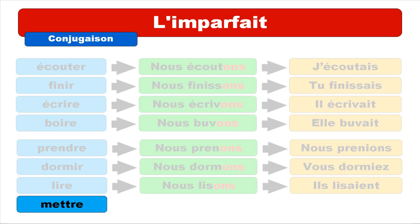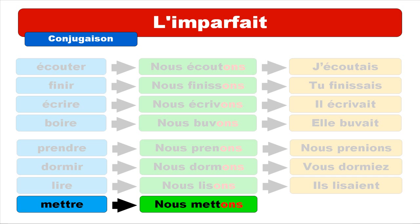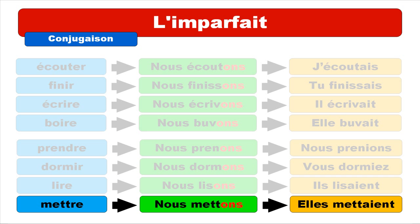Then mettre — to put — 'nous mettons'. We get 'elle mettait'. For the pronunciation, remember: when you have two t's right after the 'e', it gives you an open 'e' sound — that's the reason why we get 'elle mettait'.